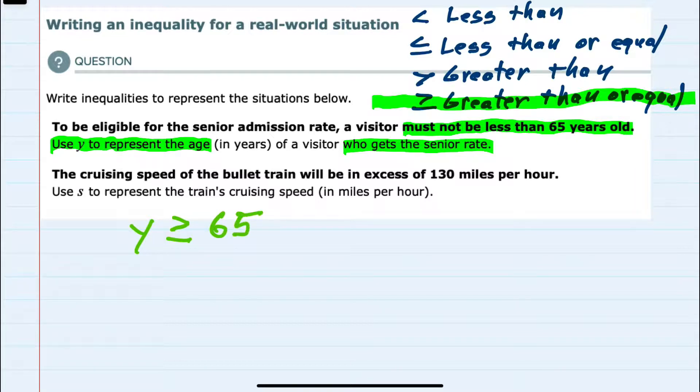That is the same as saying that they must not be less than 65. They can be 65, they can be greater than 65,